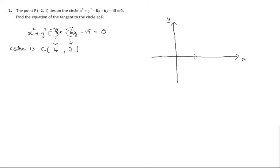So let's put that on the diagram. 4 along, 3 up, there's the center of the circle. Now we also are told that negative 2, 1 lies on the circle.